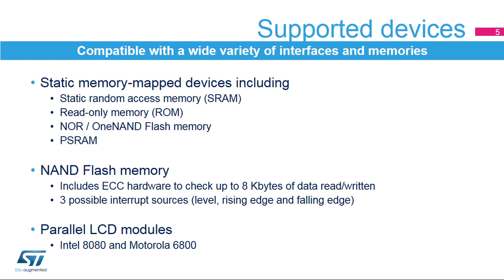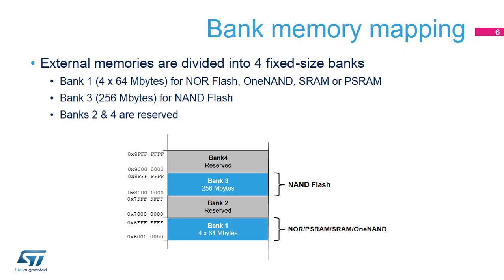Three interrupt sources can be configured to generate an interrupt when a rising edge, falling edge, or high level is detected on the NAND Flash ready/busy signal. Furthermore, the FSMC interfaces with parallel LCD modules supporting the Intel 8080 and Motorola 6800 modes and is flexible enough to adapt to various LCD interfaces. The external memory space is divided into fixed-size banks of 256 MB each. Two external memory banks are dedicated to the FSMC: Bank 1 is connected to the NOR PSRAM controller, and Bank 3 is connected to the NAND controller.